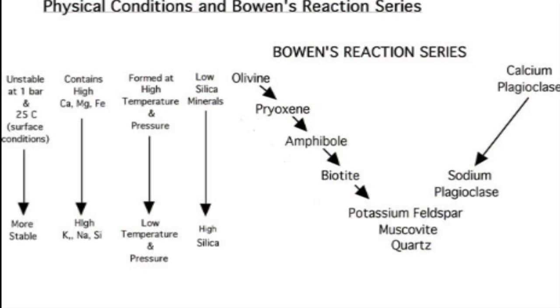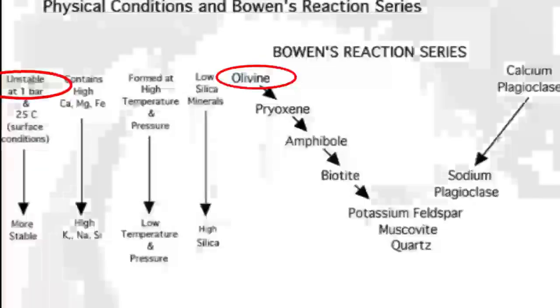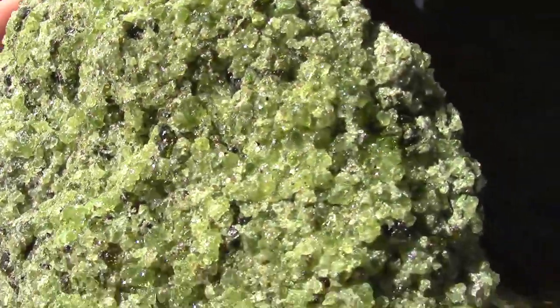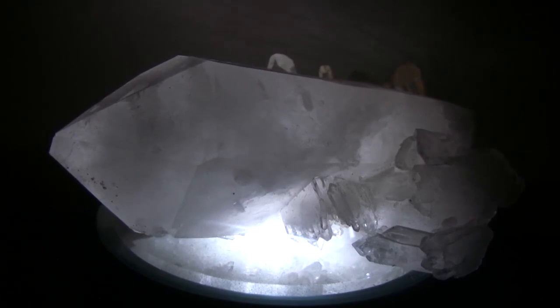The Bowen's reaction series also tells us which minerals will melt first when heated, and which minerals are more or less chemically stable at the surface. Olivine is a rare mineral at the Earth's beaches, but quartz is rather common.